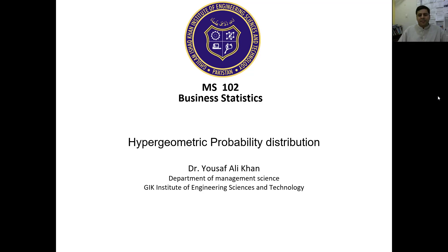Another distribution in the series is the hypergeometric probability distribution. It is another type of discrete probability distribution, and it is more similar to binomial distribution.